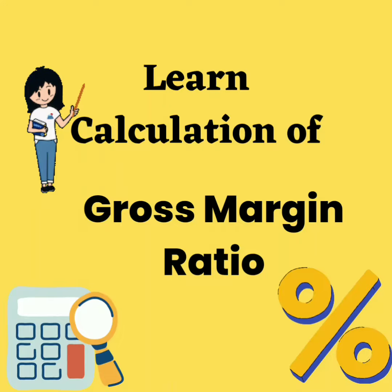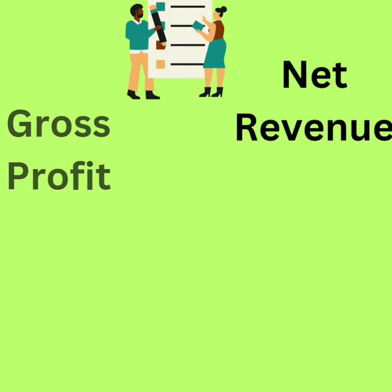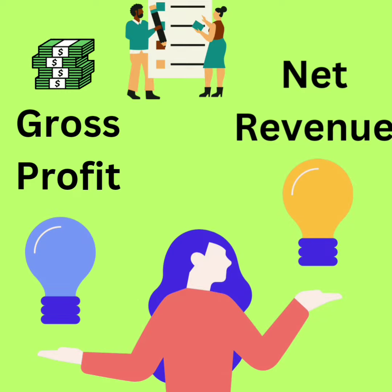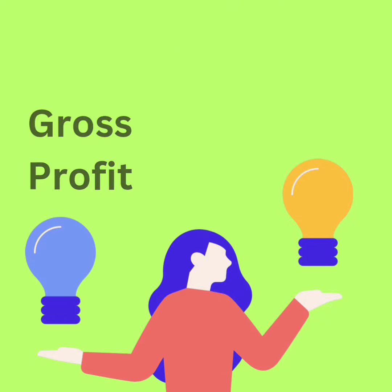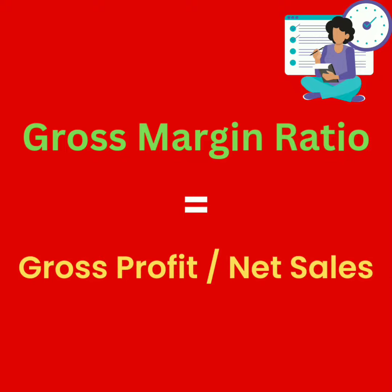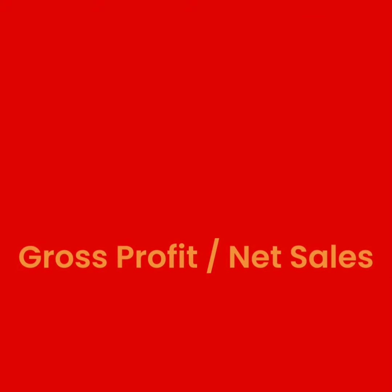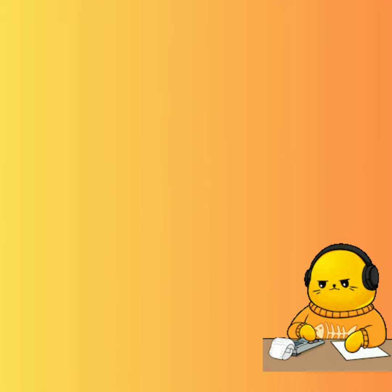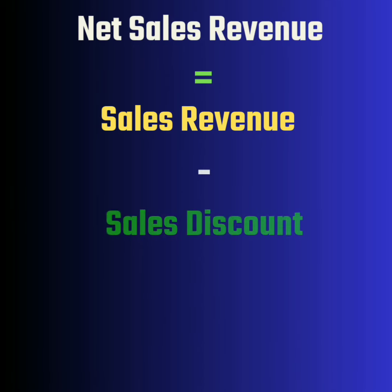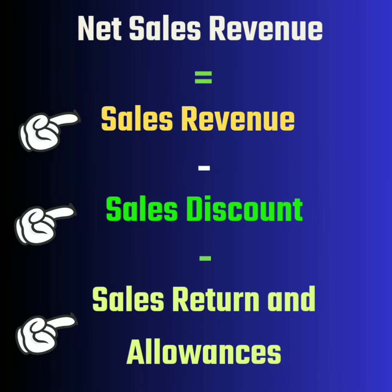Hi learners, in this video you are going to learn how to compute gross margin ratio. It is a profitability ratio that compares the gross profit of a company to its total revenue. The formula of gross margin ratio is gross profit divided by net sales. Let's see how to compute each component. Net sales revenue equals sales revenue